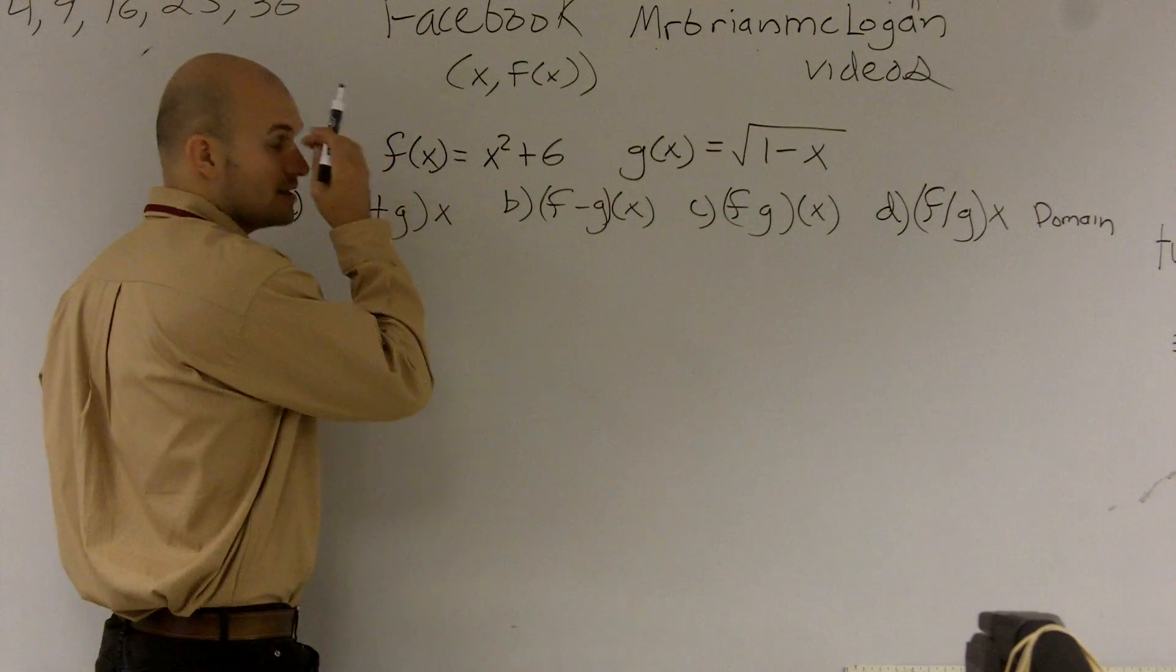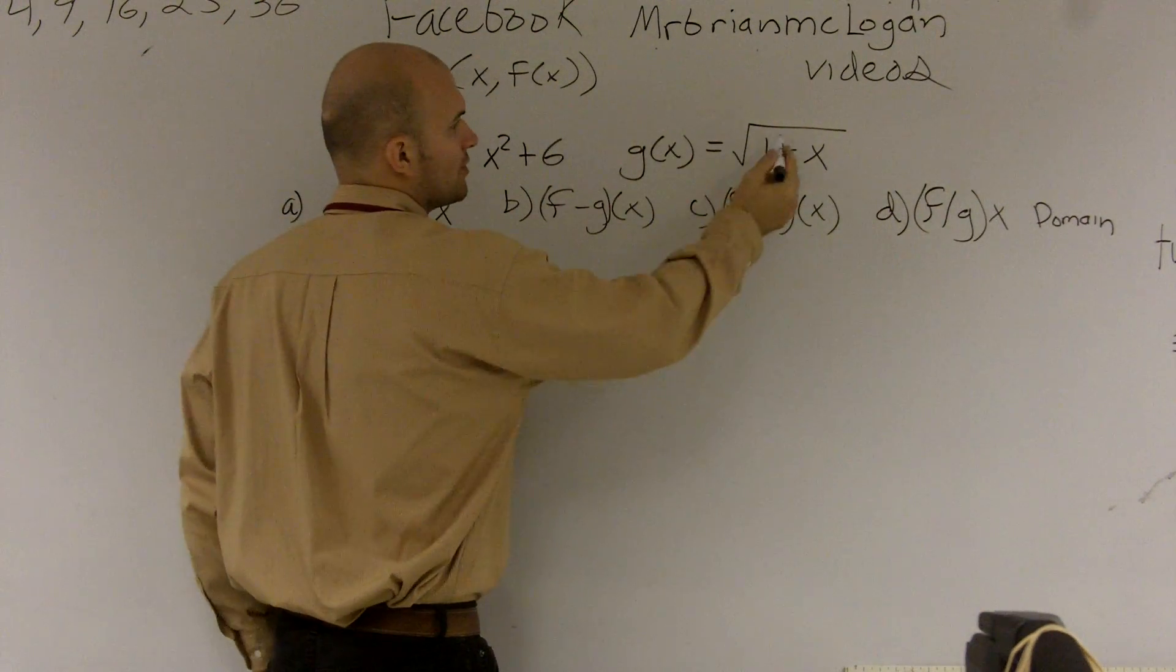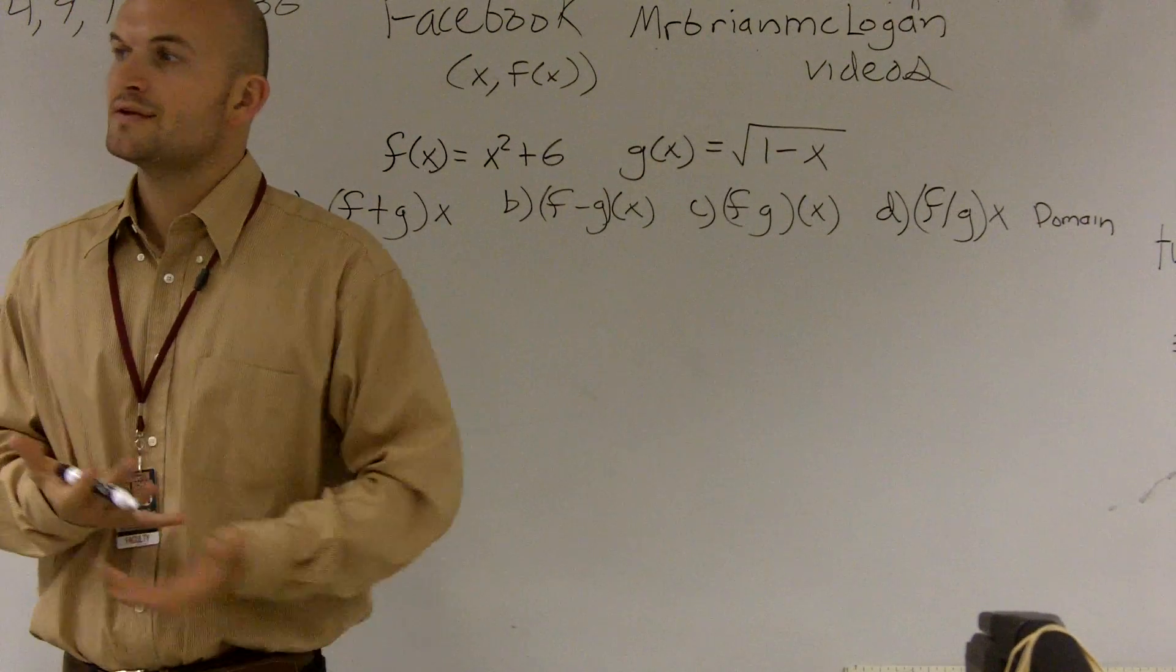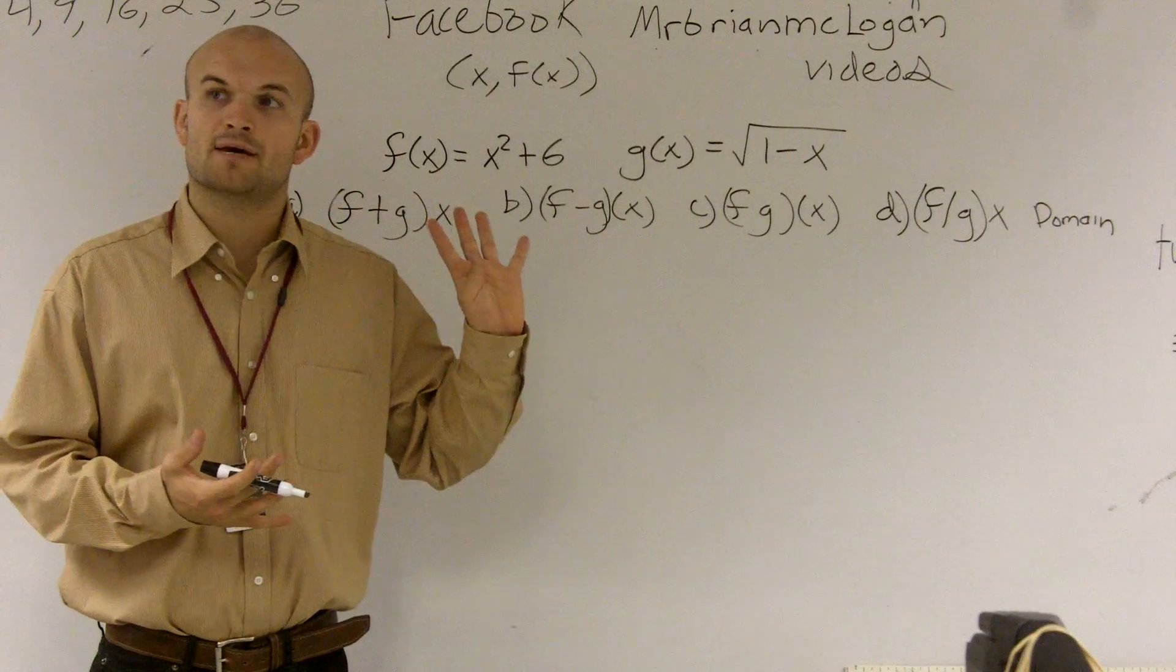So we're giving two functions, f of x, which is x squared plus 6, and we have another function, g of x, equals the square root of 1 minus x. So we're going to do some combining of these functions, and there's going to be four different ways we're going to learn how to combine the functions.